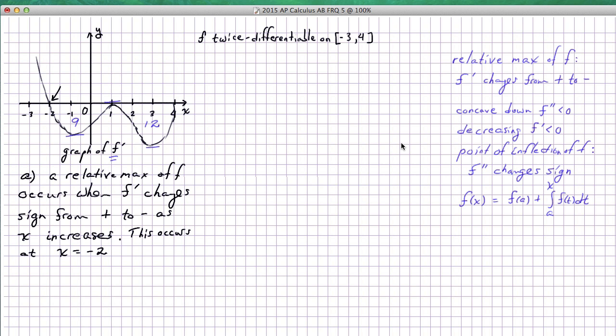Next, in part b, we're looking for open intervals where f is concave down and simultaneously decreasing. A note in case you're not familiar: the phrase open interval simply means an interval where we do not include the endpoints. Again, we've got our concepts on the right in blue. Concave down means that f double prime is less than 0, but given that we're looking at the graph of f prime, f double prime is represented by the slope of this graph.